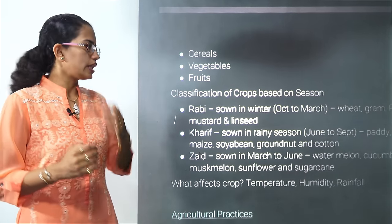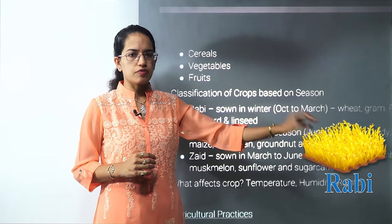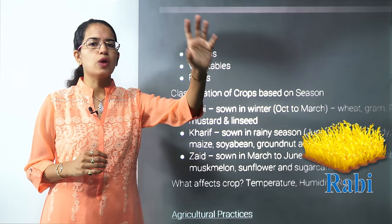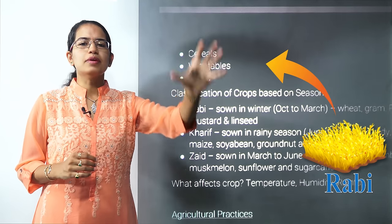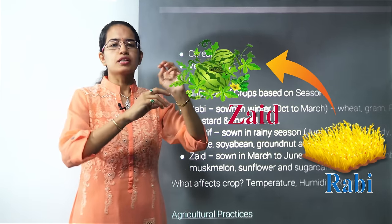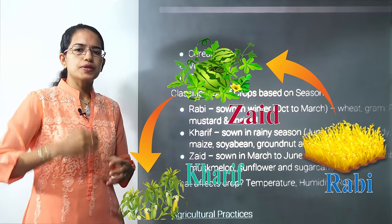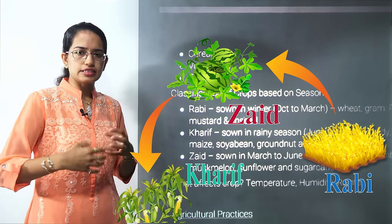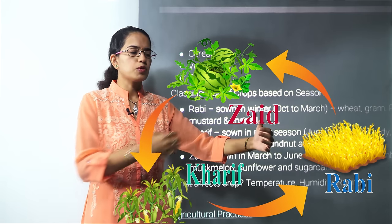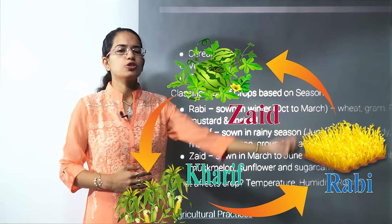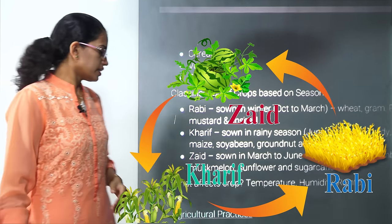There are predominantly three cropping seasons in India. The first is the Rabi season — seeds are sown during winter months and crops are ready by spring. Then there are three months of Zayad season where mostly fruits and vegetables are grown. After that comes the Kharif season, where sowing is done during summer months and crops are ready by the next Rabi season.